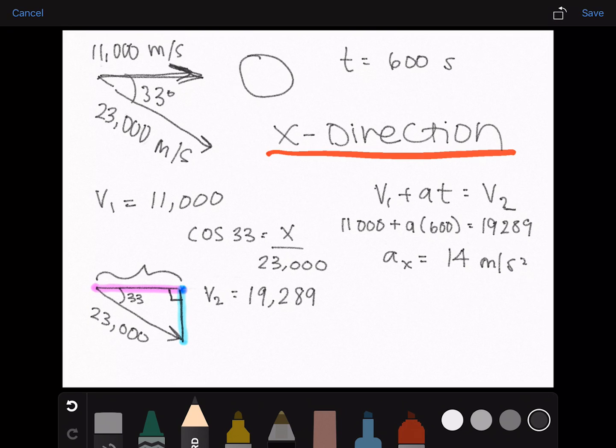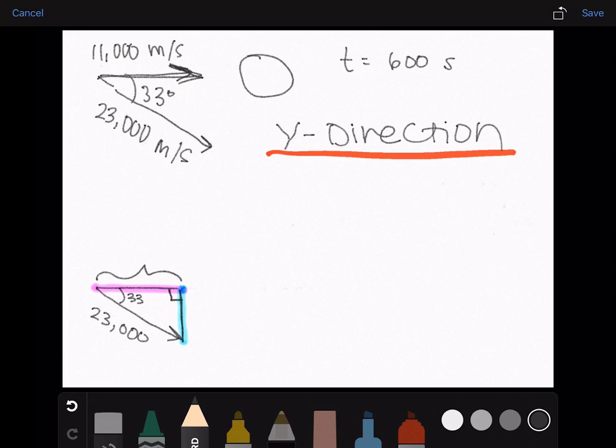Now let's do the y direction. So our initial velocity in the y direction is 0, because it's only moving in the x direction. And then v2 will now be this blue highlighted part.